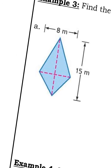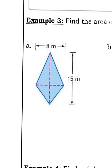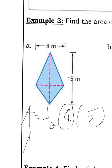Now let's go over to this one. I'm given 8 as the diagonal going from left to right, and the diagonal going from top to bottom is 15. So this one's just one half of 8 times 15. That's going to give me an area of 60 square meters.